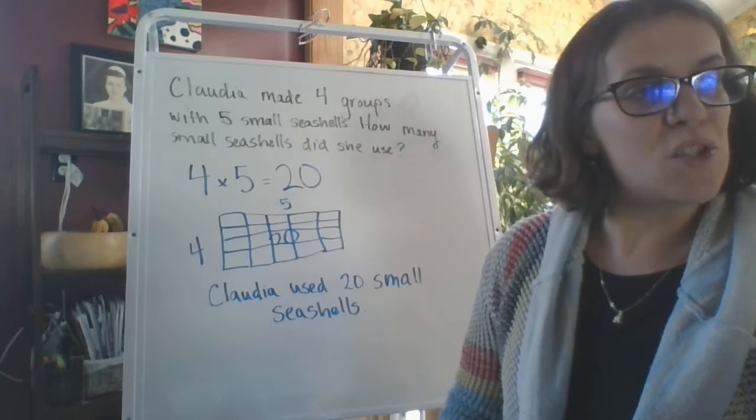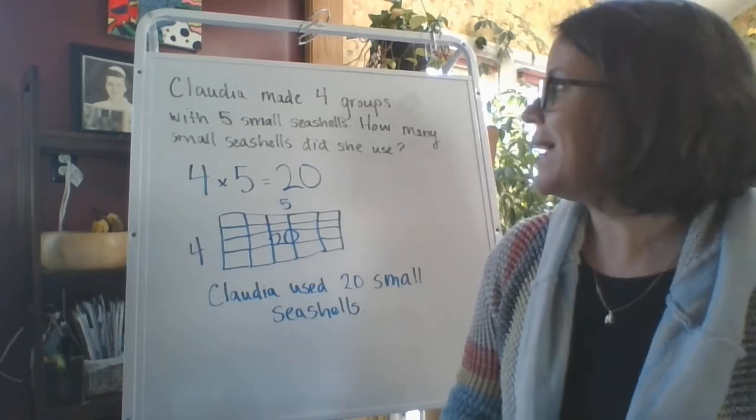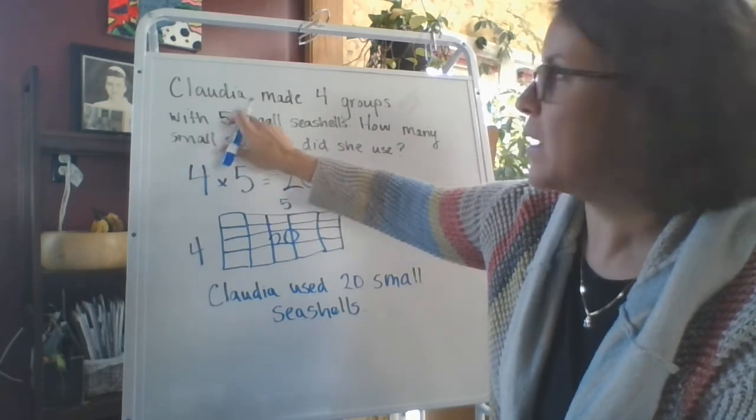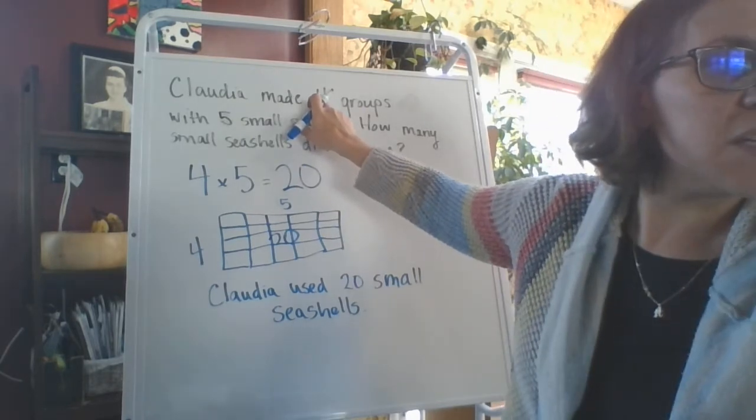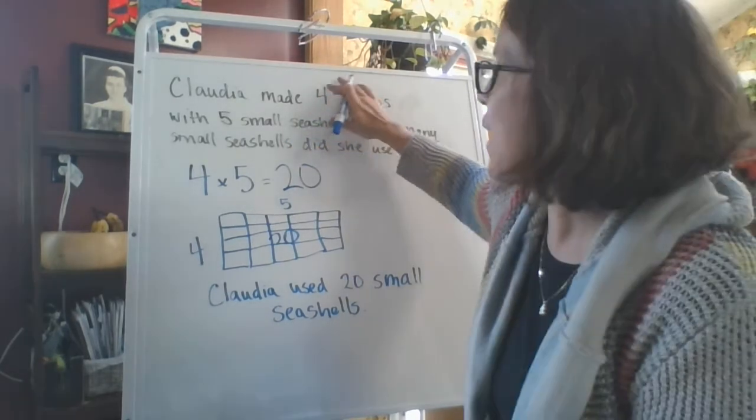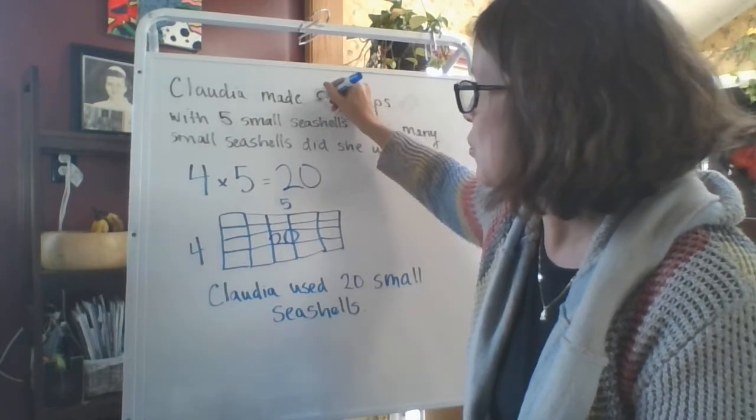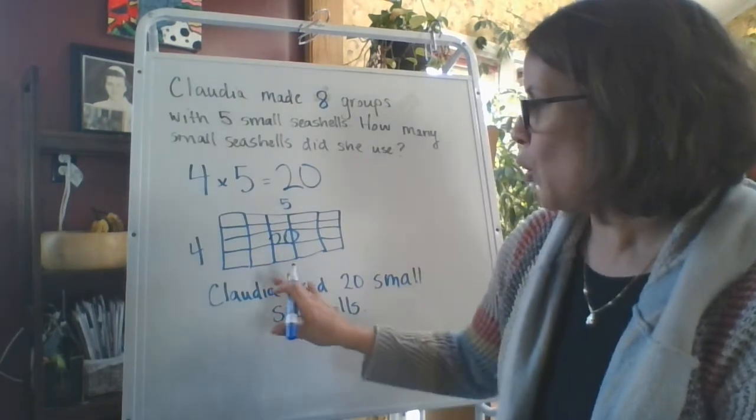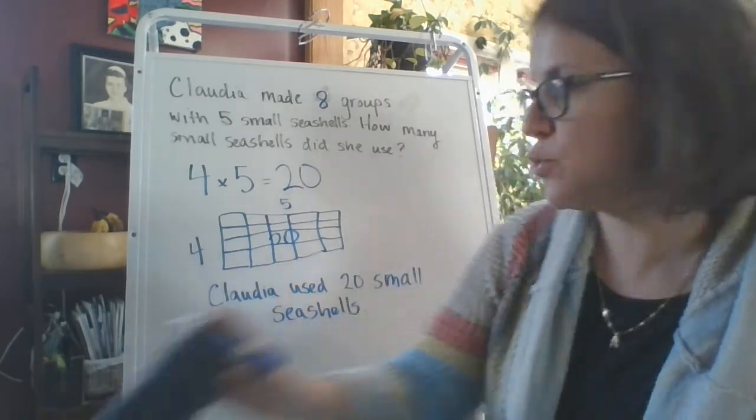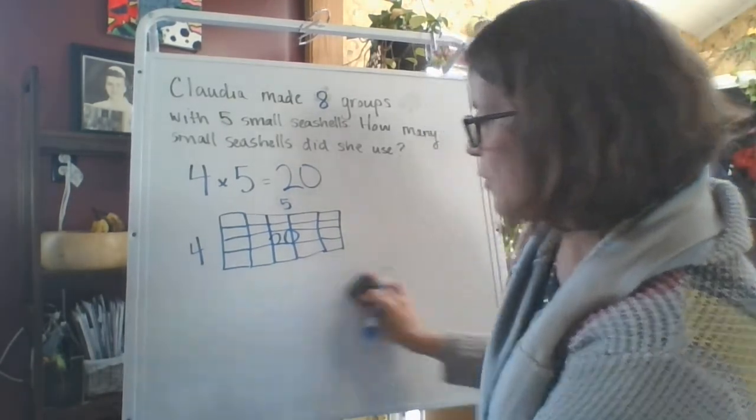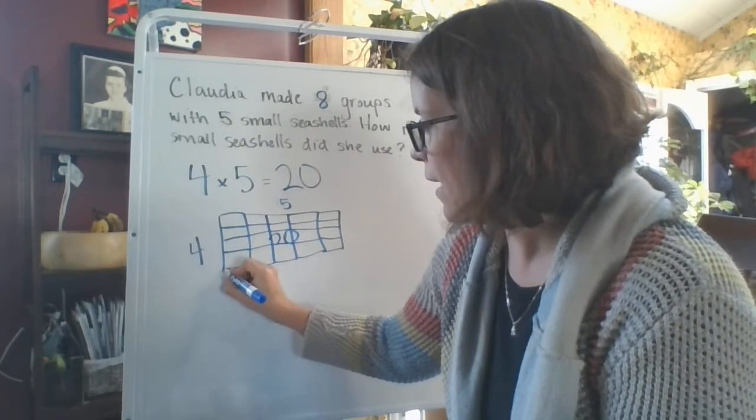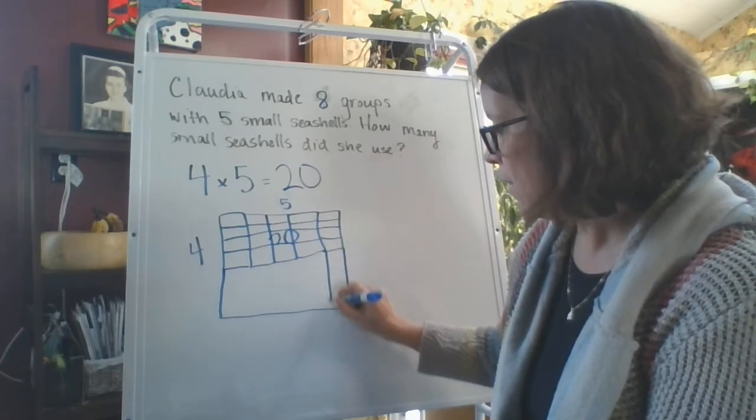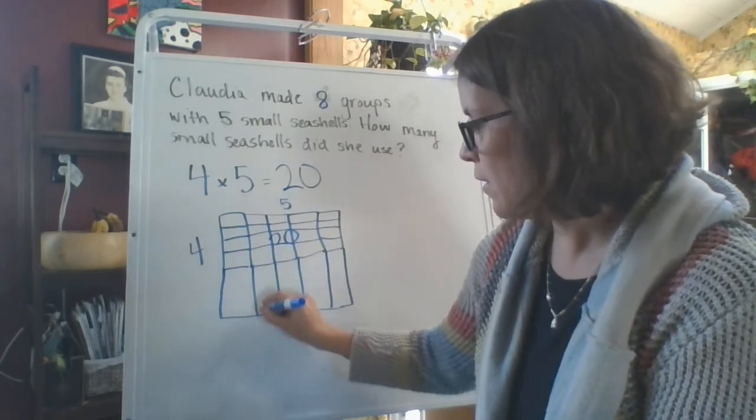So then the next problem, what they're doing is they're doubling. So instead of four groups, she's making, I'm just going to change my number here, but it's actually your problem. They're making eight groups. So what do we know about this? We can actually, I'm going to erase my answer.